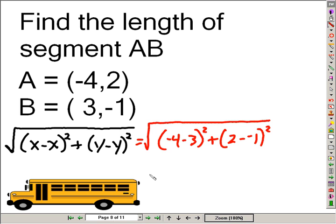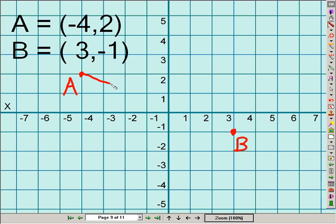Simplify everything underneath the radical. Equal, square root of 58. And that should be approximately 7.6. Is 7.6 reasonable? The distance from here to here. Well, if the distance from negative 4 to 3 is 7, then 7.6 seems reasonable.